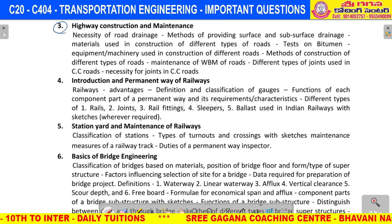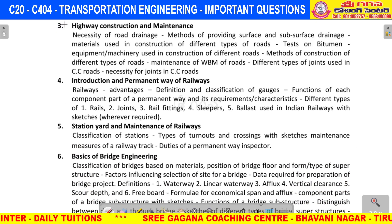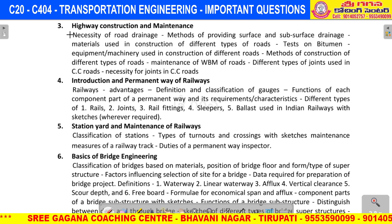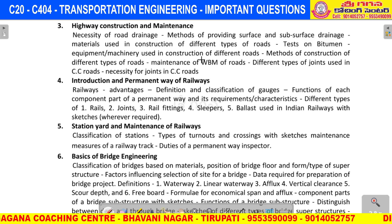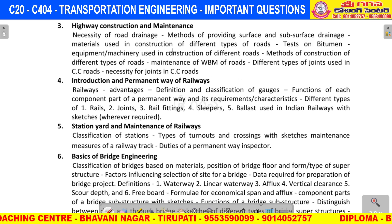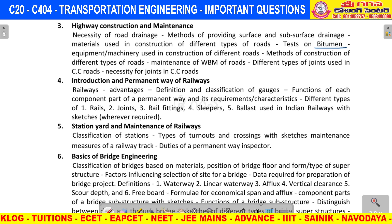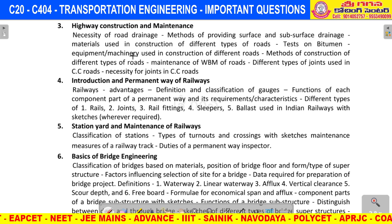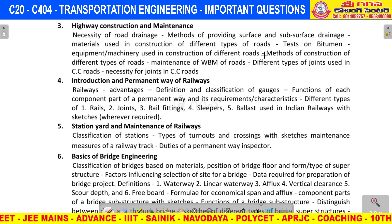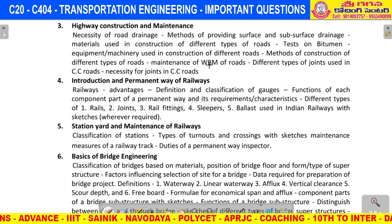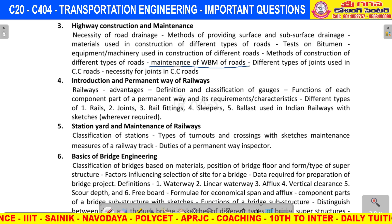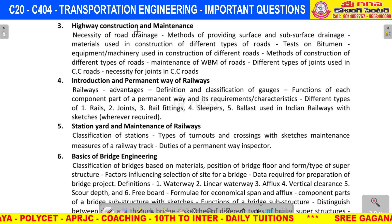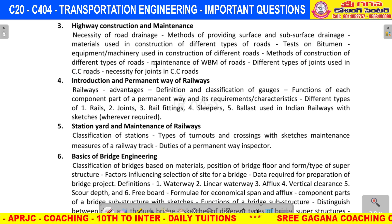The third unit is Highway Construction, worth 14 marks with two short answers and one essay. Important questions in the third unit: different methods of construction of bitumen roads, explain different construction methods. Also important are different types of water bound macadam roads and their maintenance procedure. For cement concrete (CC) roads, different types of joints including construction joints are important.